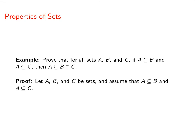Now we start out by letting A, B, and C be sets, and that's because we're dealing with a universal statement here. And then, because we have a conditional statement, here's an if-then, we'll do a direct proof and assume the hypothesis. We'll assume that A is a subset of B and A is a subset of C.